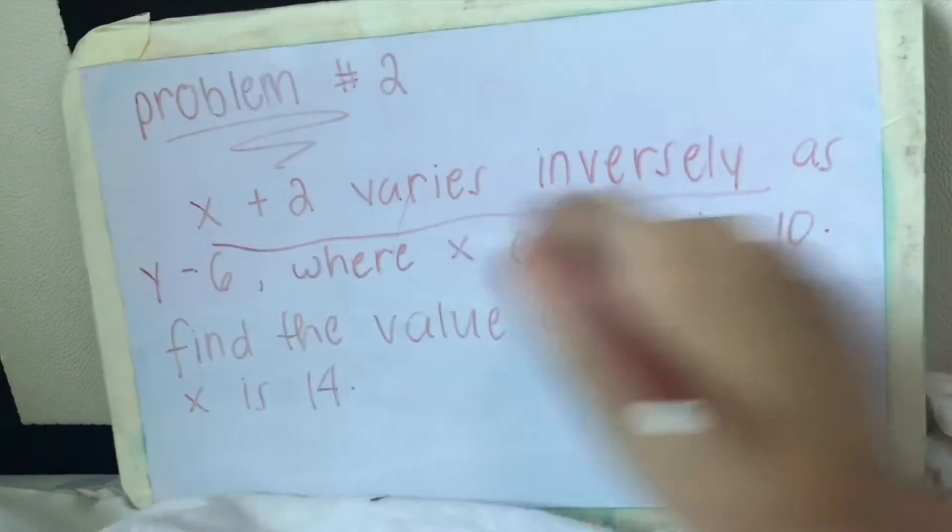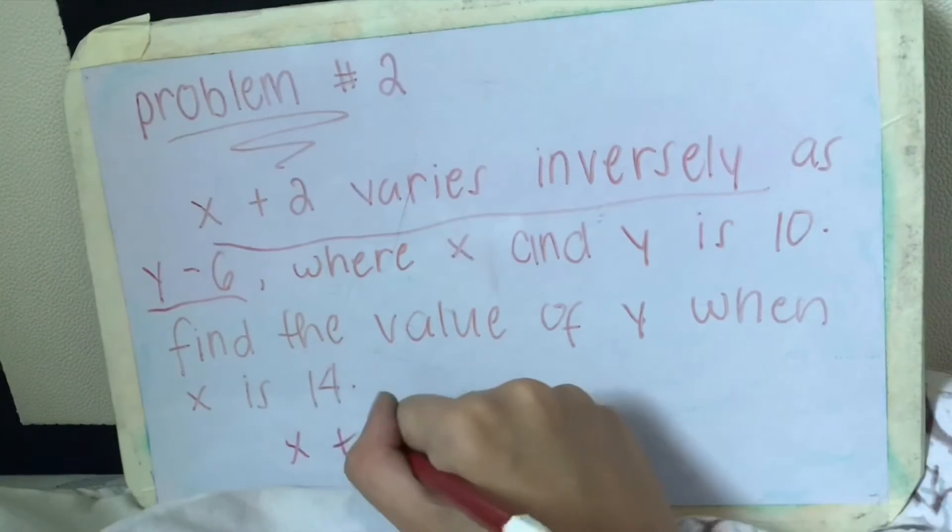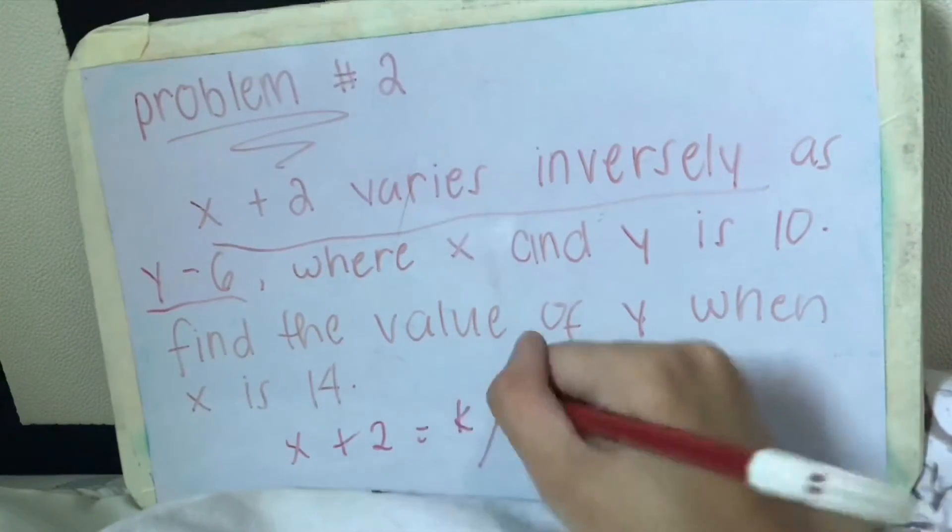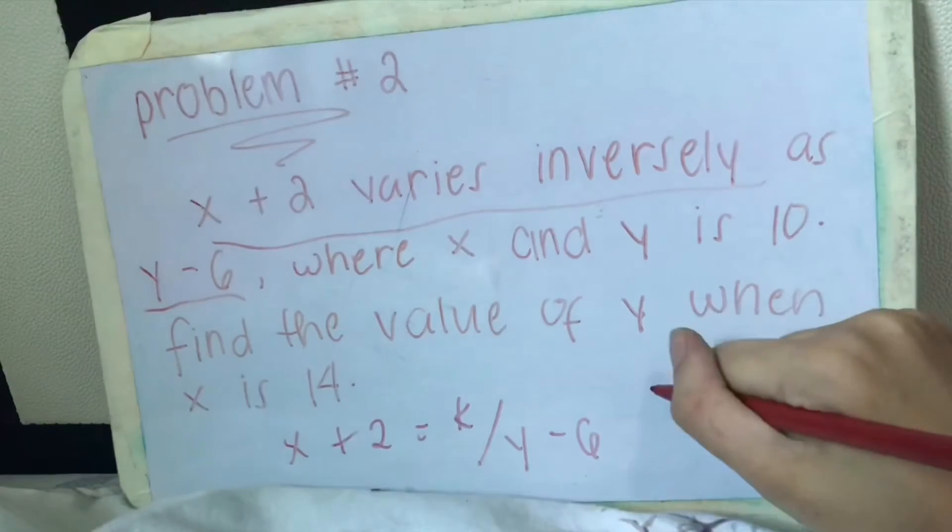So x plus 2 varies inversely as y minus 6. That can be converted as x plus 2 equals k over y minus 6, where x and y equals 10. Find the value of y when x is 14.